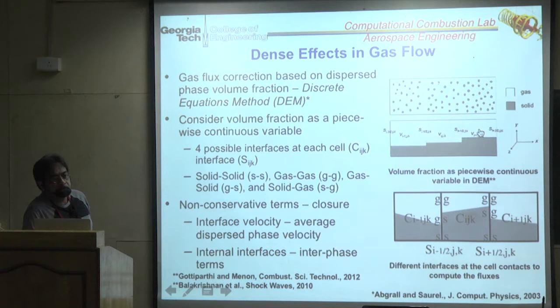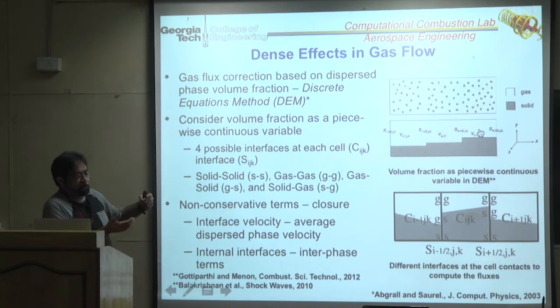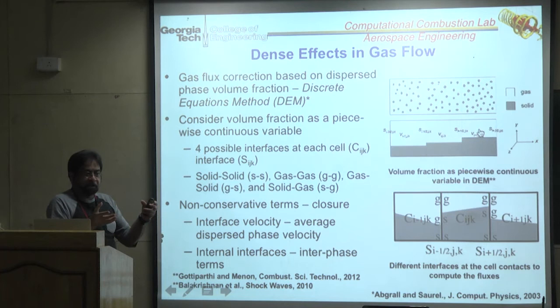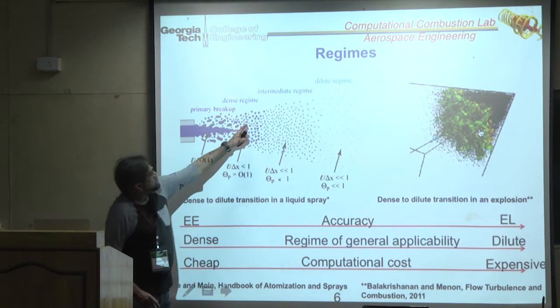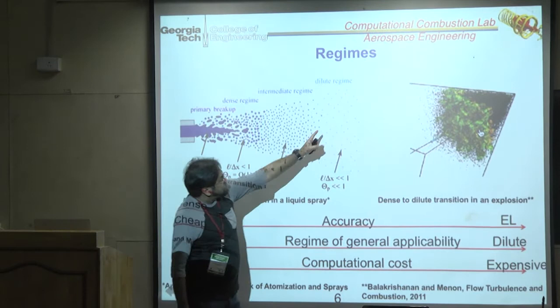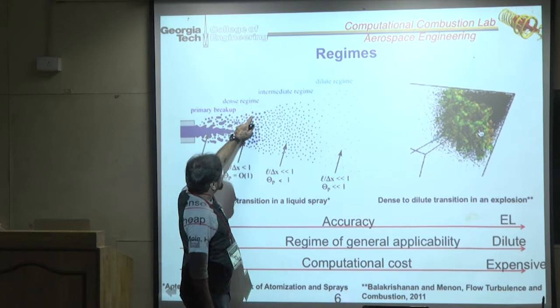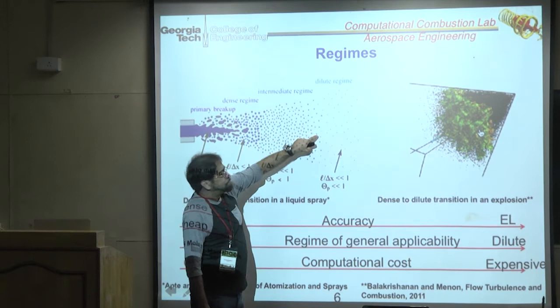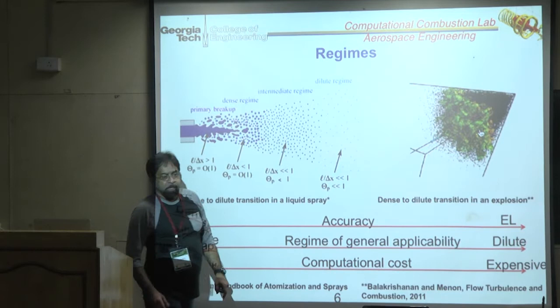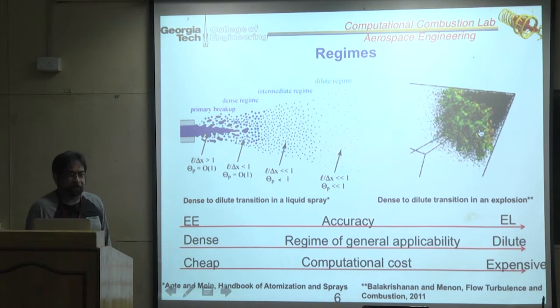A 90% volume fraction is in the very dense regime — that's where volume-of-fluid methods would be needed for ligament breakup. Eulerian-Eulerian works in the dense region, Lagrangian in the dilute region; DEM handles the transition zone, automatically going to zero as volume fraction α becomes small.